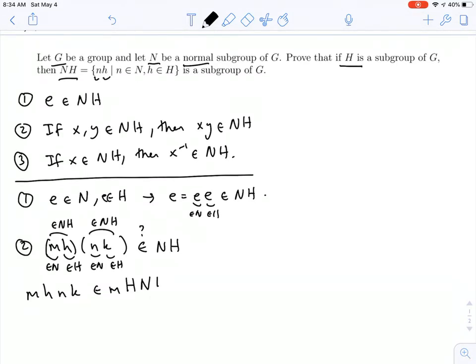And because I know that N is a normal subgroup, that means that N is going to commute as a set with any element or any subset. So this is equal to m, n, h, n, h, little k.